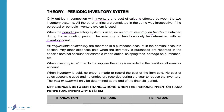All acquisitions of inventory are recorded in the purchases account. In the perpetual system, you record inventory when you buy it in the inventory account. When you use the periodic system, you record it in the purchases account, which is a nominal account because it is an expense.